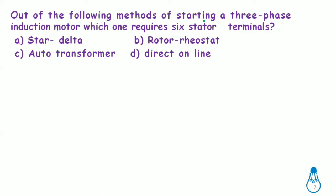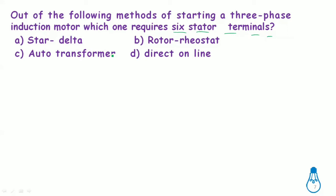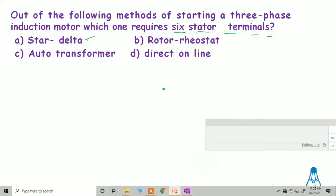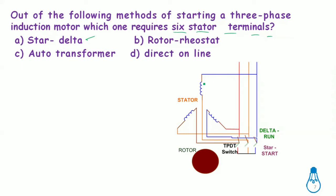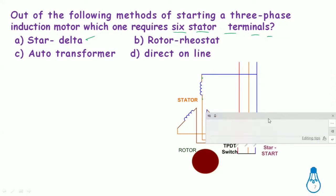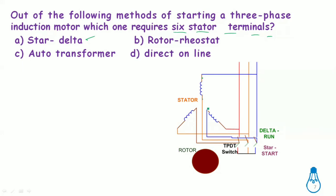Out of the following starting methods for three-phase induction motors, which one requires six stator terminals? The answer is star-delta starting. Each of the three stator windings has two terminals, giving a total of six terminals. This allows the windings to be connected first in star and then switched to delta configuration.